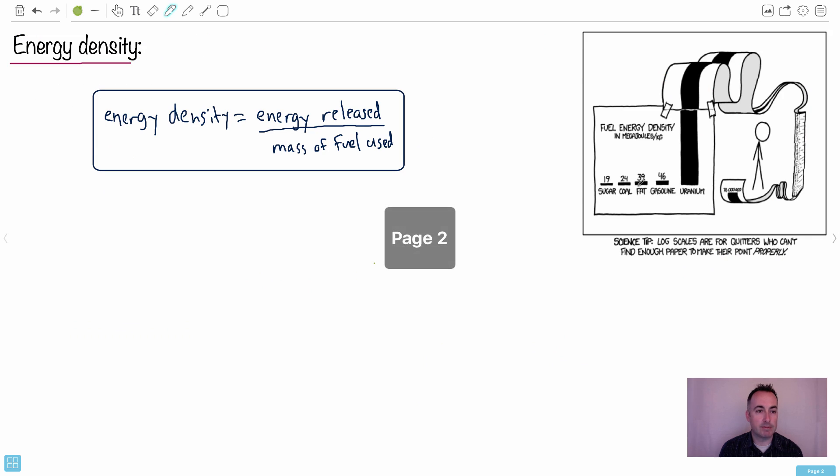All right, next we've got energy density. I really like this one. Energy density is just the energy released divided by the mass of the fuel used. So I love this one here, this is again from xkcd.com. This is a great one here, one of the many pictures they did.